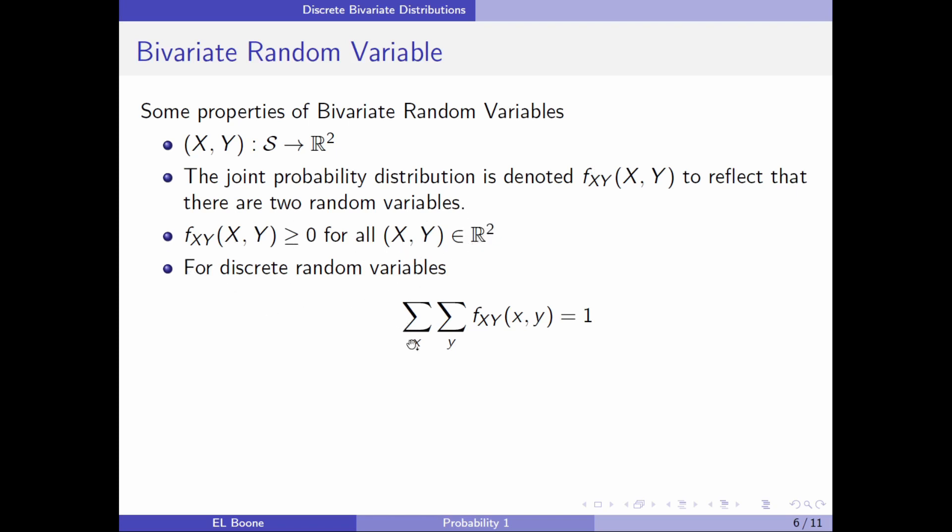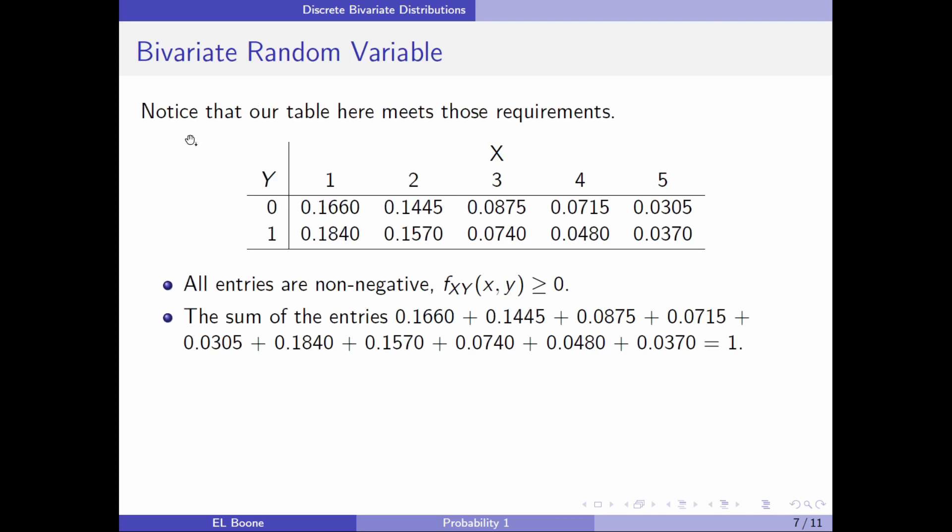For discrete random variables, when we add everything up, it has to come out to one. Going back to our table that we had before, you can see it meets those requirements. All the entries here are not negative—there's no zeros even, they're all positive numbers. And then if you add them all up, it equals one. So this is an appropriate probability distribution for our two random variables.